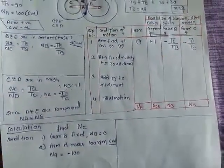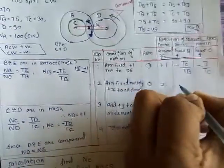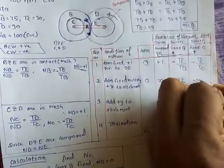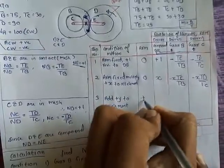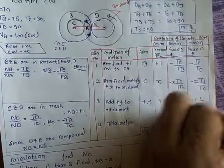Then B is clockwise, sign will be negative, minus TD upon TC. Hope you will get it. Now we will add plus X element and plus Y element.